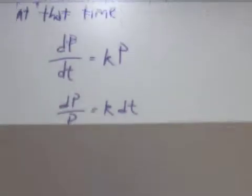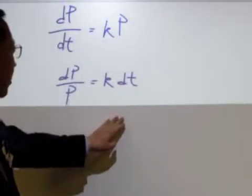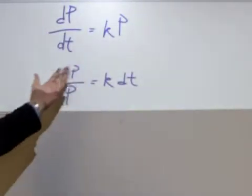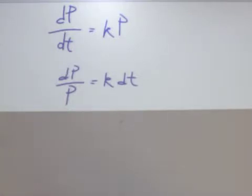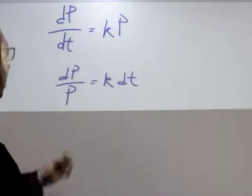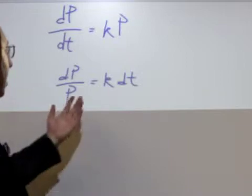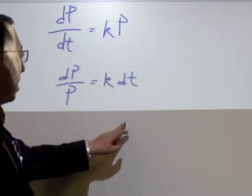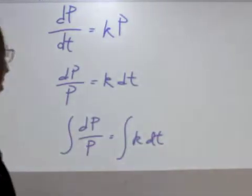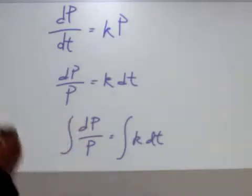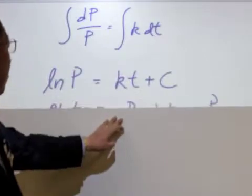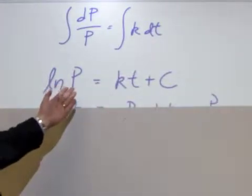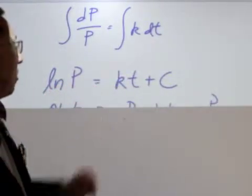So let's try to solve this differential equation. To solve this, we get all the p's on one side and put everything that involves t on the other side. So we've got dp over p is equal to k dt. We're going to integrate both sides, and what do we get?